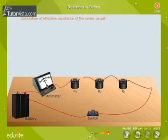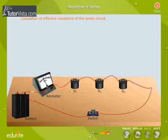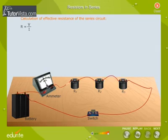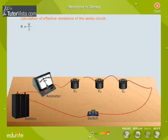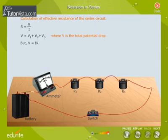Let us now calculate the effective resistance of the circuit using Ohm's law. The mathematical representation of Ohm's law is R is equal to V by I. In a series circuit, the potential drop across each resistor varies. Hence we calculate the potential drop V1, V2, and V3 across resistors R1, R2, and R3 respectively. The total potential V is equal to V1 plus V2 plus V3, but V is equal to IR.